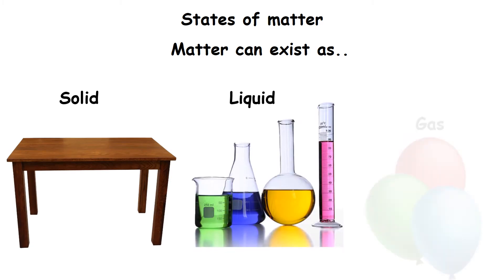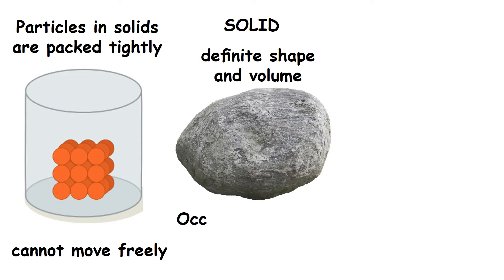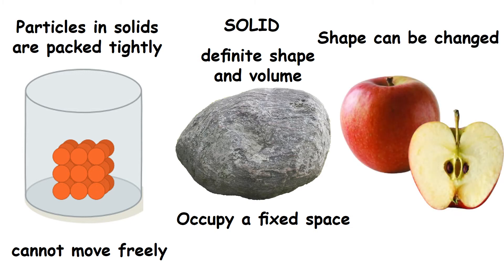States of Matter. Matter can exist as solid, liquid or gas. Solids. The particles in solids are packed very tightly. So they cannot move freely. They have a definite shape and volume. They occupy a fixed space. Their shape can be changed only when we break or cut them.